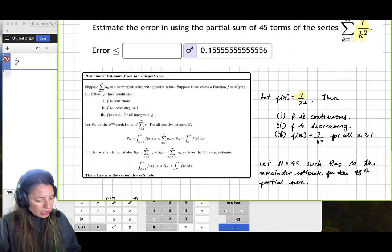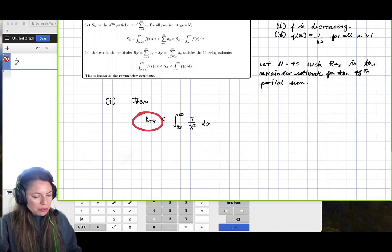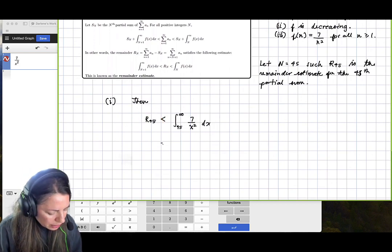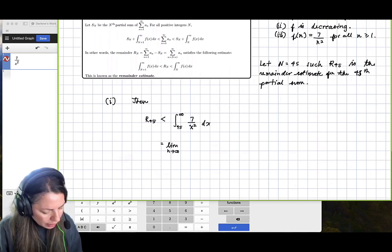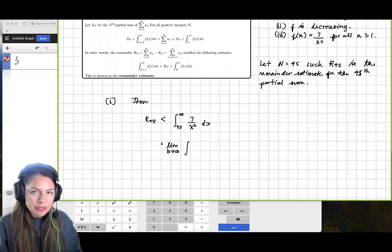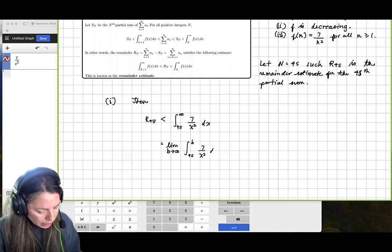And then it kind of looks exactly like set up as our answer here. And so that's what we're going to do. So we're going to work on that right side. And so now we know this is going to be equal to the limit as b goes to infinity of 45 to b of 7x squared dx.